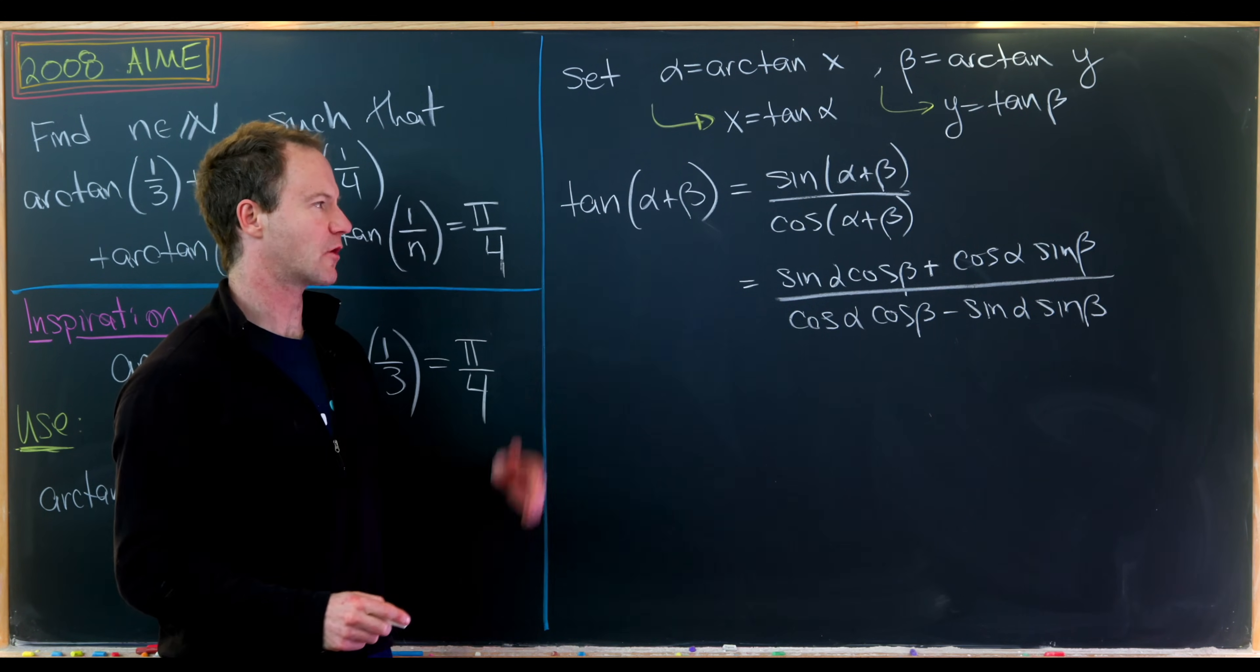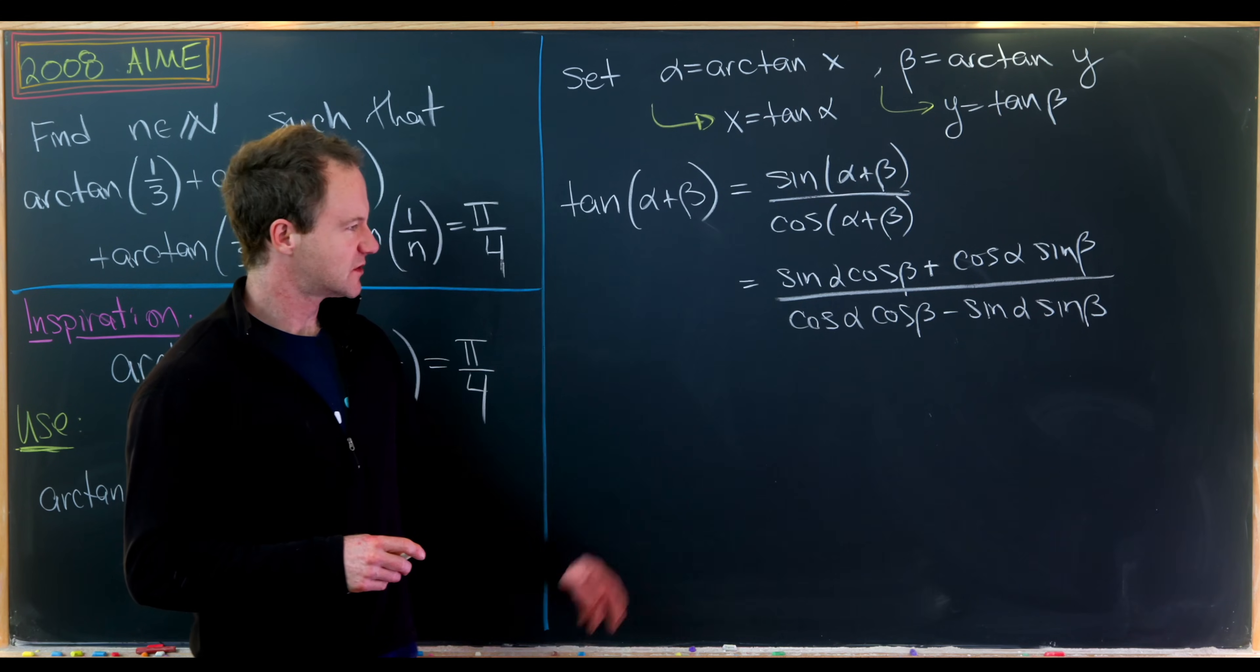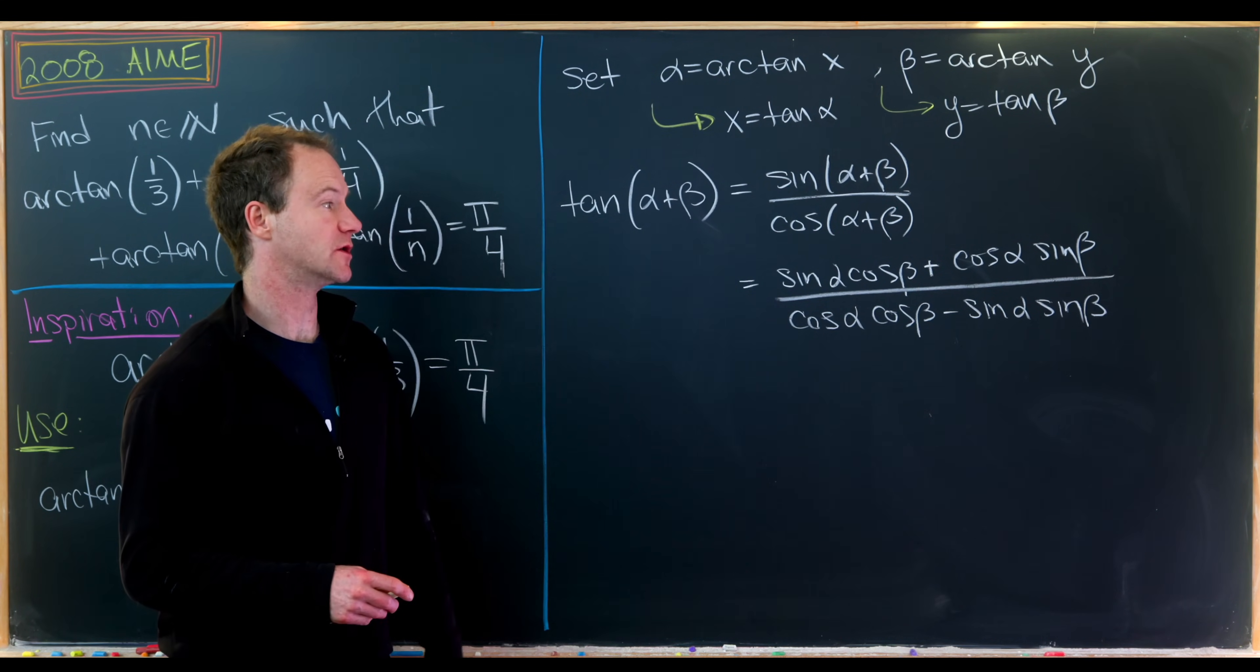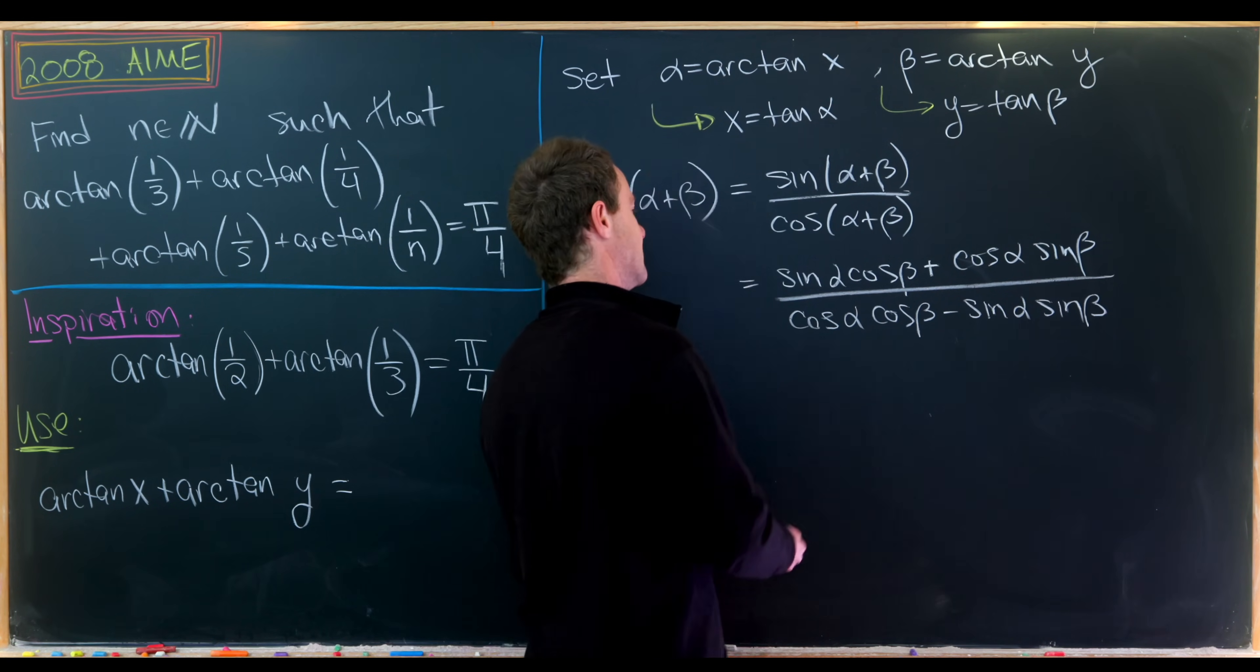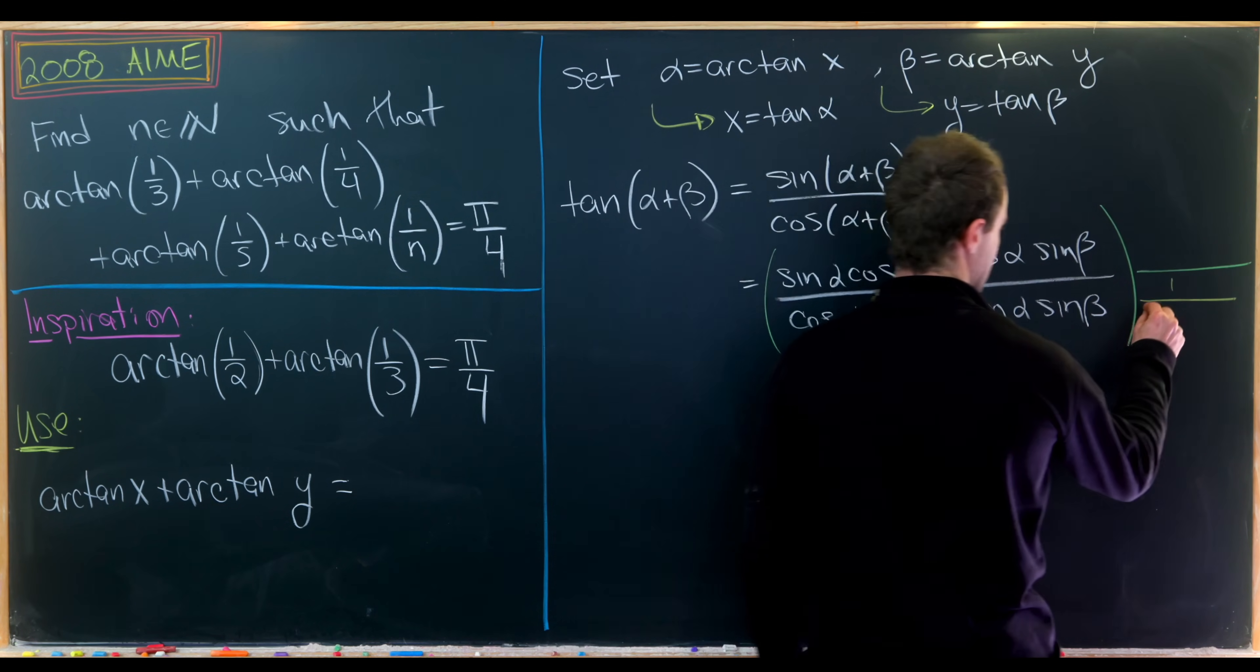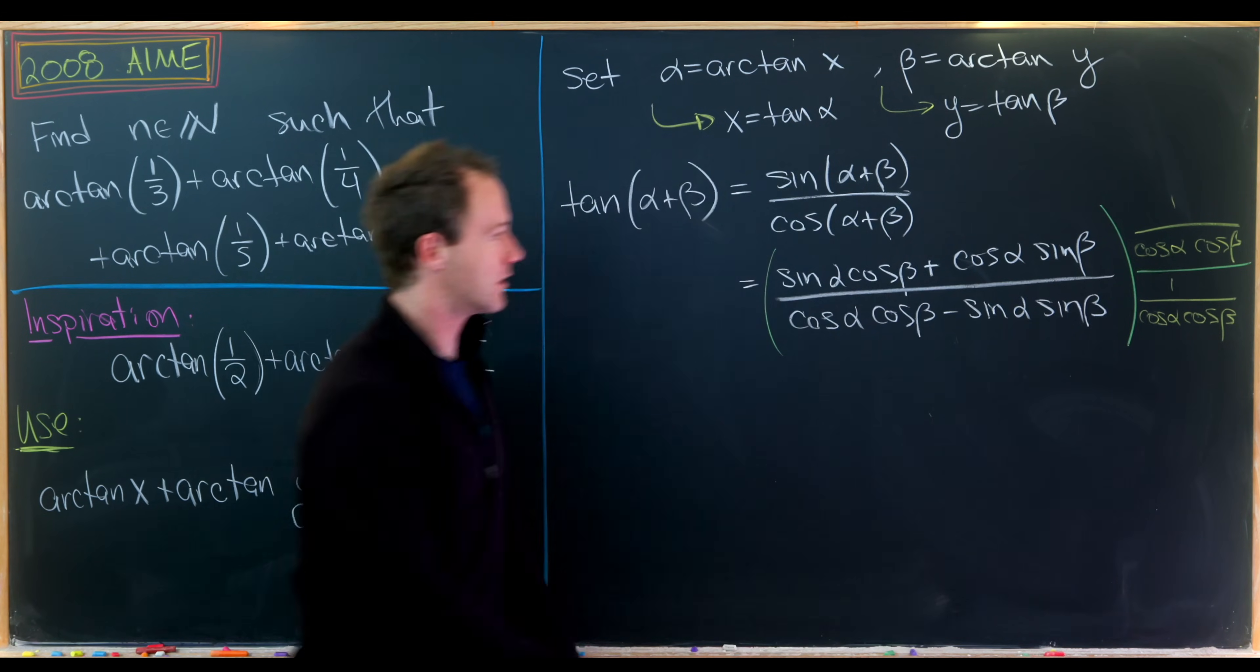We'd like to rearrange this so it involves tangents, since we're working in this tangent world. Let's notice that this denominator can be turned into something involving tangents by dividing the entire expression by cos(α)cos(β). Looking at the numerator, that will also turn it into something involving only tangent. So let's multiply both numerator and denominator by 1/(cos(α)cos(β)).